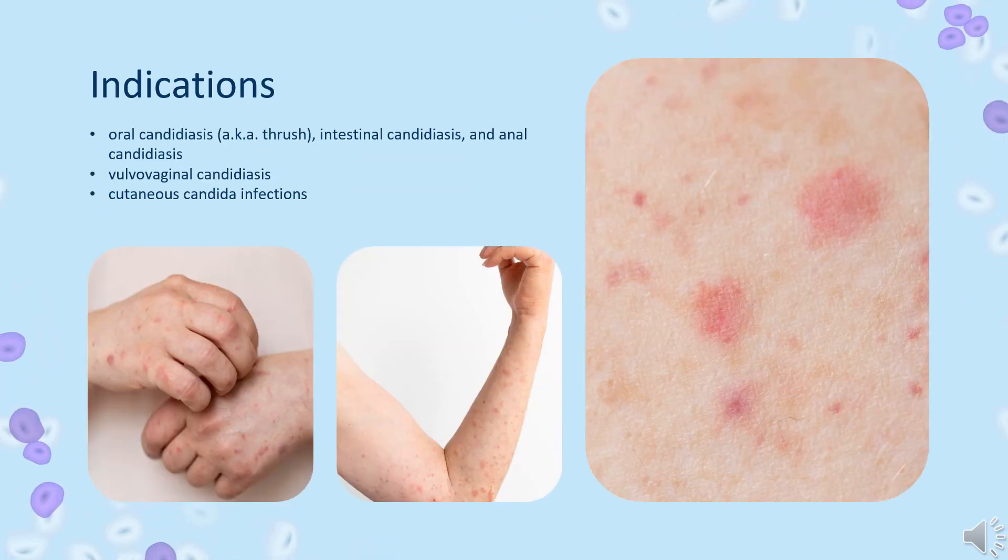Nistatin is available in oral formulations for the treatment and/or prevention of oral candidiasis (also known as thrush), intestinal candidiasis, and anal candidiasis. It is indicated topically for the treatment of vulvovaginal candidiasis and other cutaneous Candida infections.